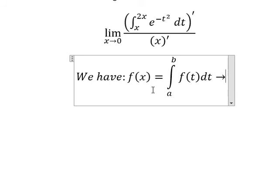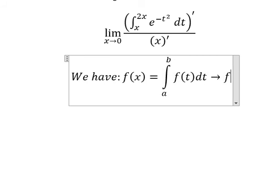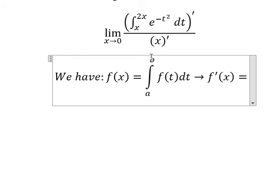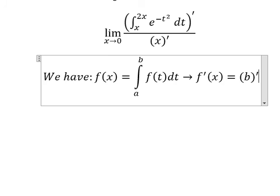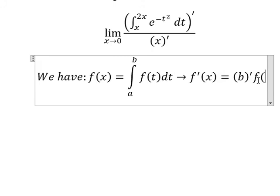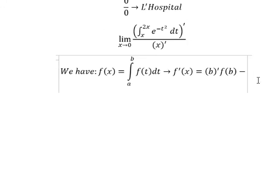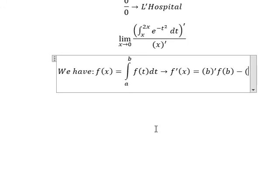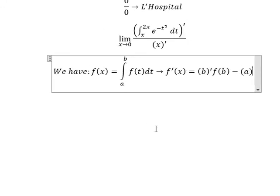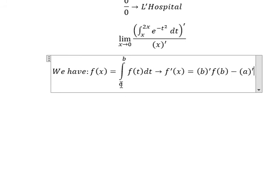So if we do the first derivative of this one, we need to do the first derivative of b, and the value of b will change for t, minus we do the first derivative of a, and the value of a will change for t.